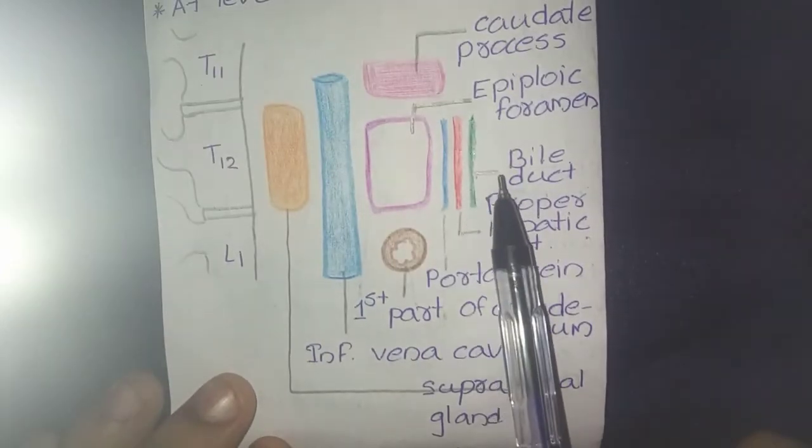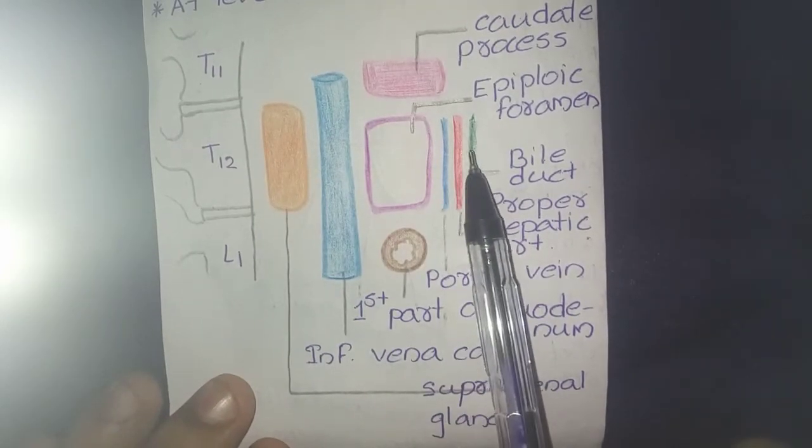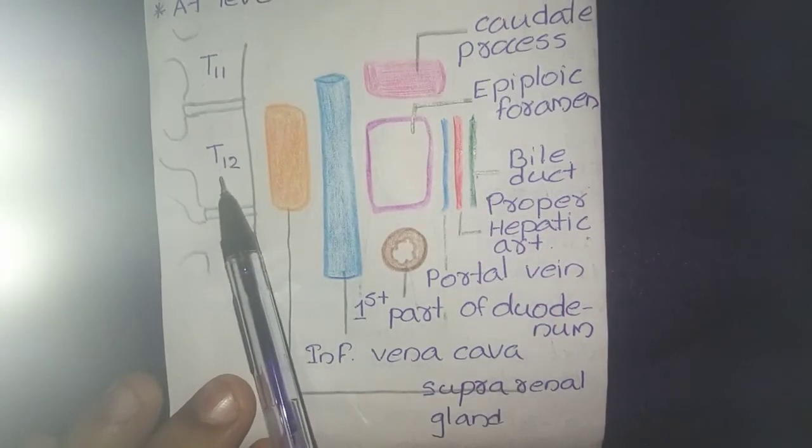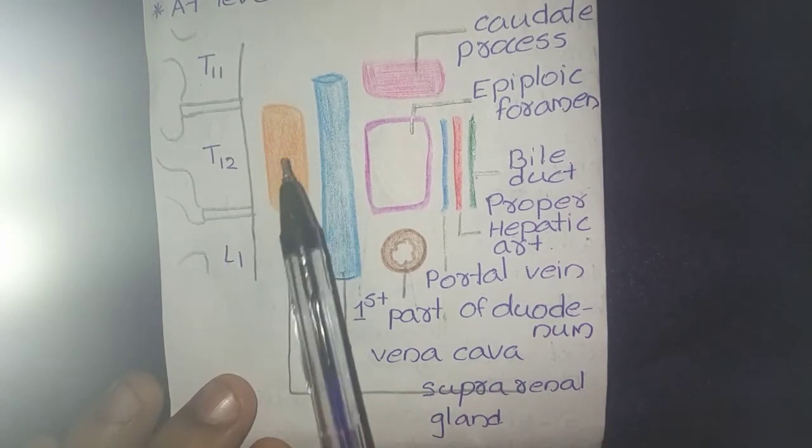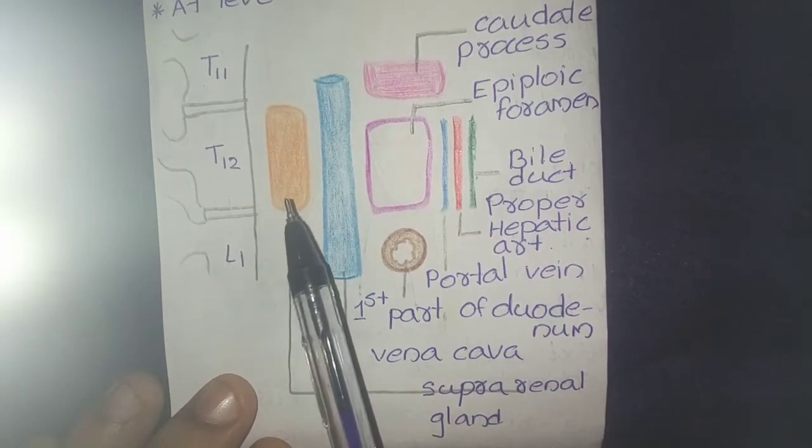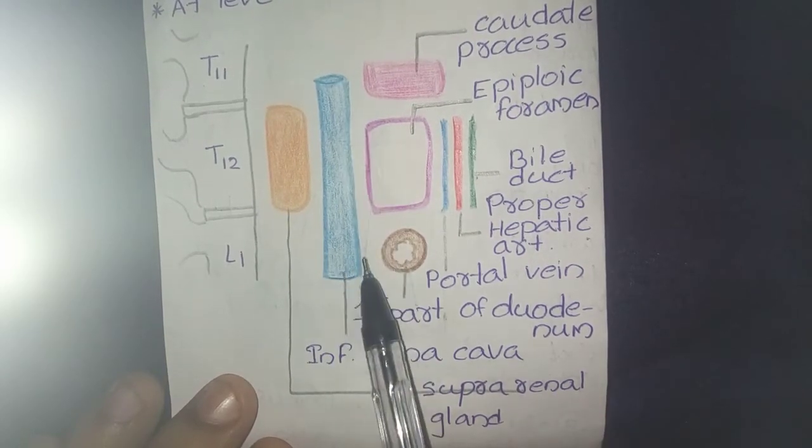Posteriorly it will be the T12 vertebra and right suprarenal gland which is here in the orange color, and inferior vena cava which is here.